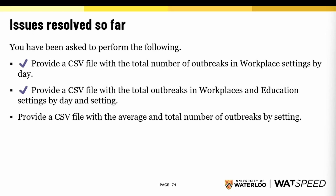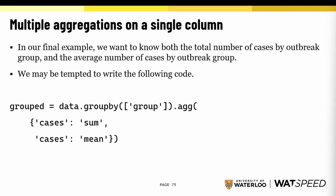Finally, our last challenge is to create a CSV file with the average and total number of outbreaks by setting. In this case, we want to do multiple aggregations on one column — we want the total number of cases by outbreak group and the average number of cases by outbreak group. You may be tempted to group by OUTBREAK_GROUP and then aggregate cases by sum and again by mean.